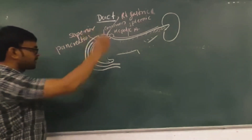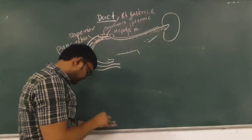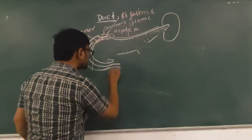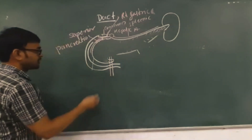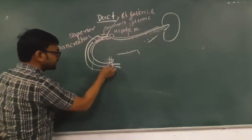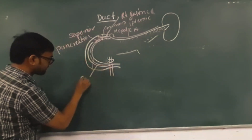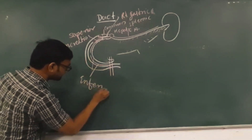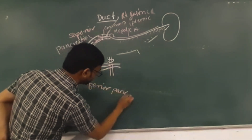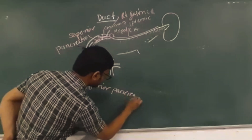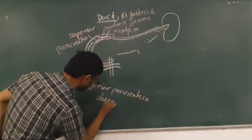Here at the pancreas, the superior mesenteric artery gives a branch — the inferior pancreaticoduodenal artery.